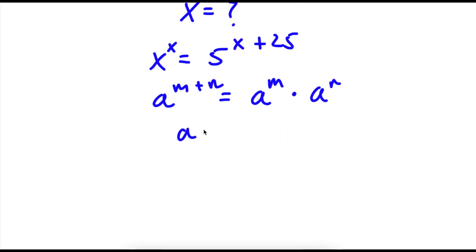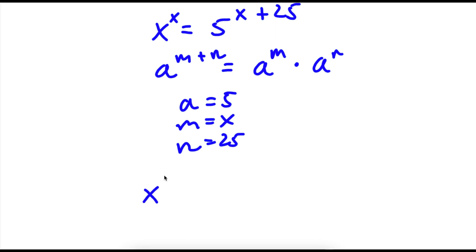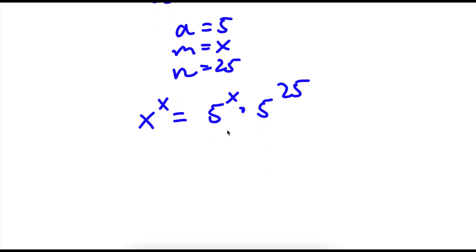So in this case, a would equal 5, m would equal x, and n would equal 25, because we have 5 to the power of x plus 25. So now I can rewrite 5 to the power of x plus 25 as 5 to the power of x times 5 to the power of 25. So now I have x to the power of x is equal to 5 to the power of x times 5 to the power of 25.